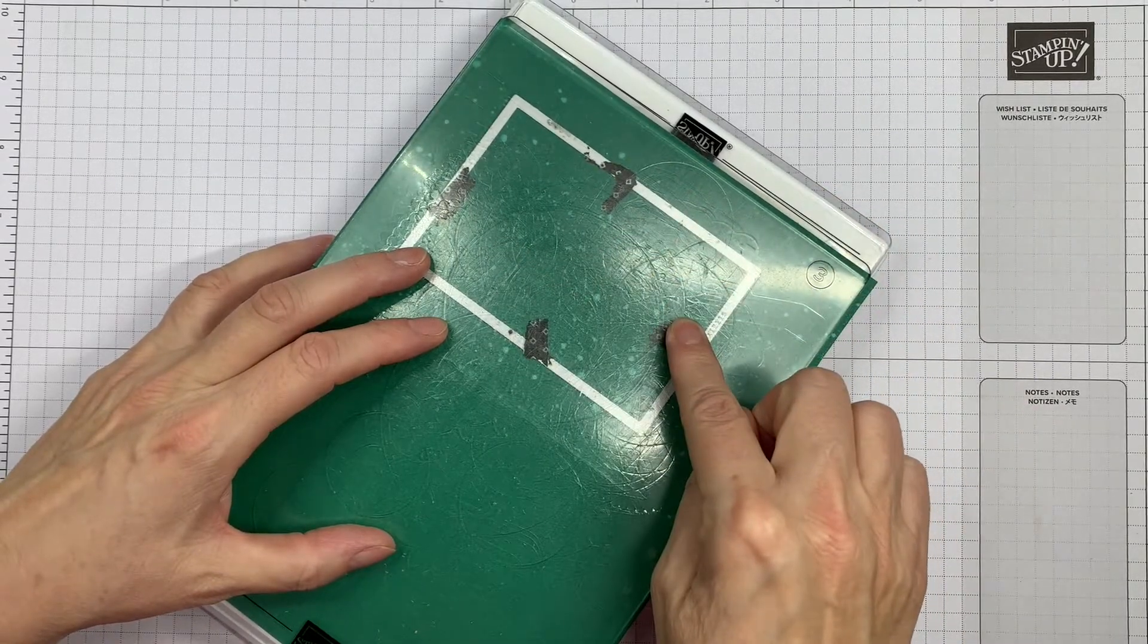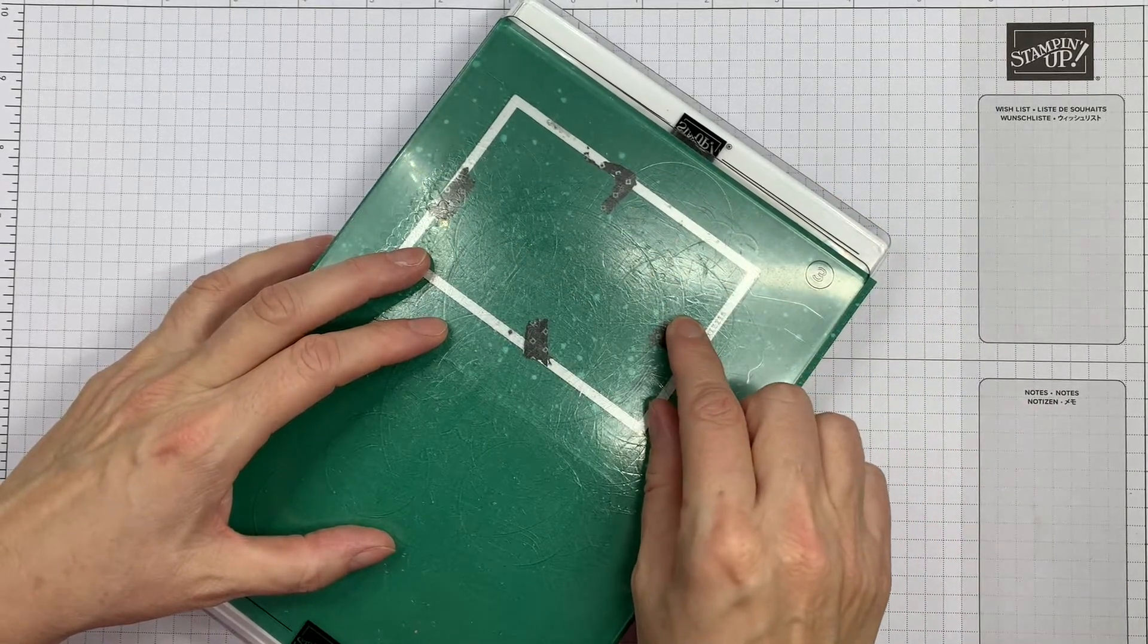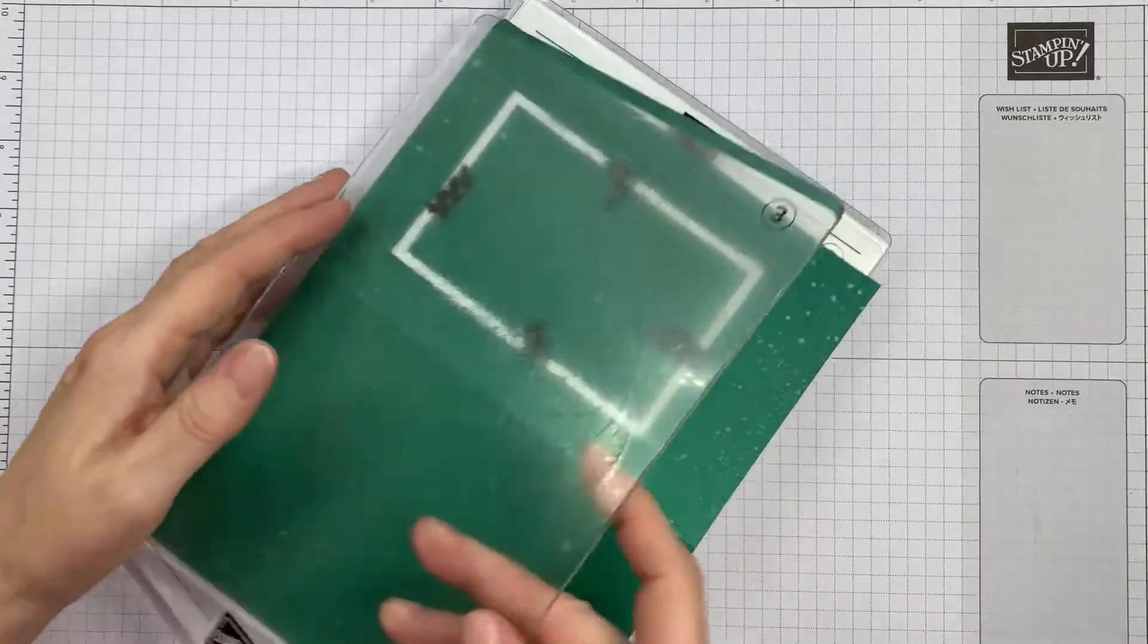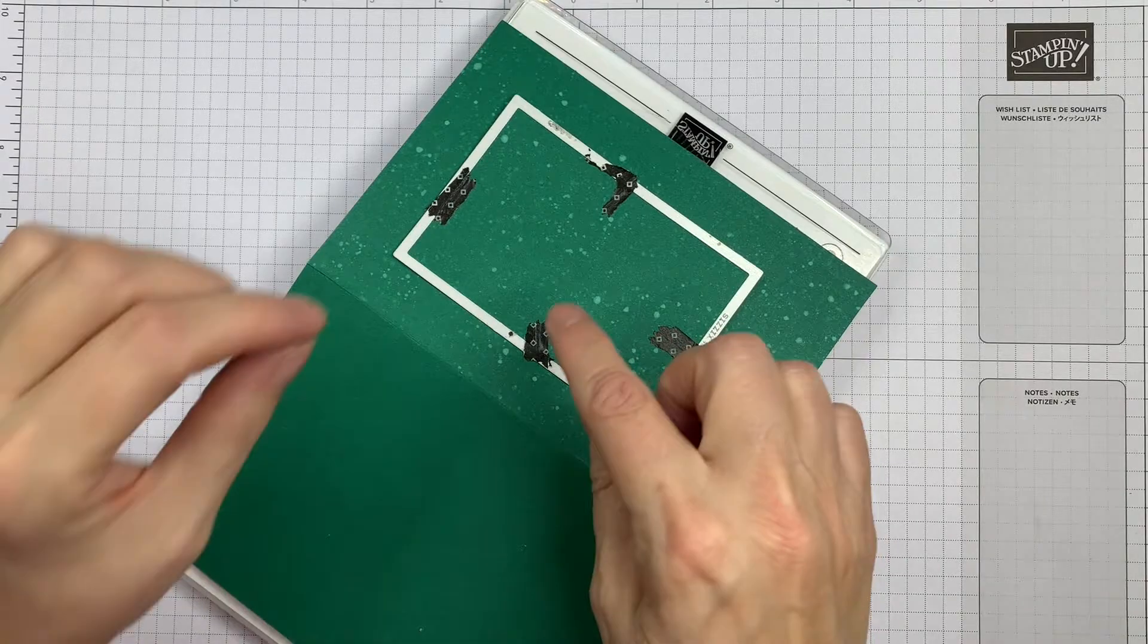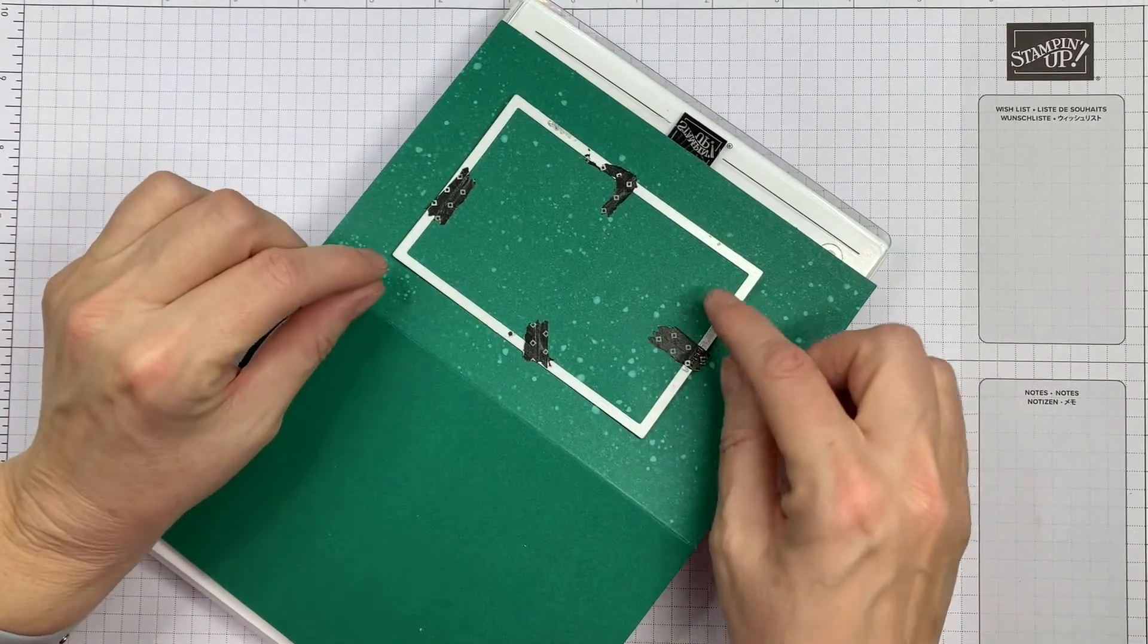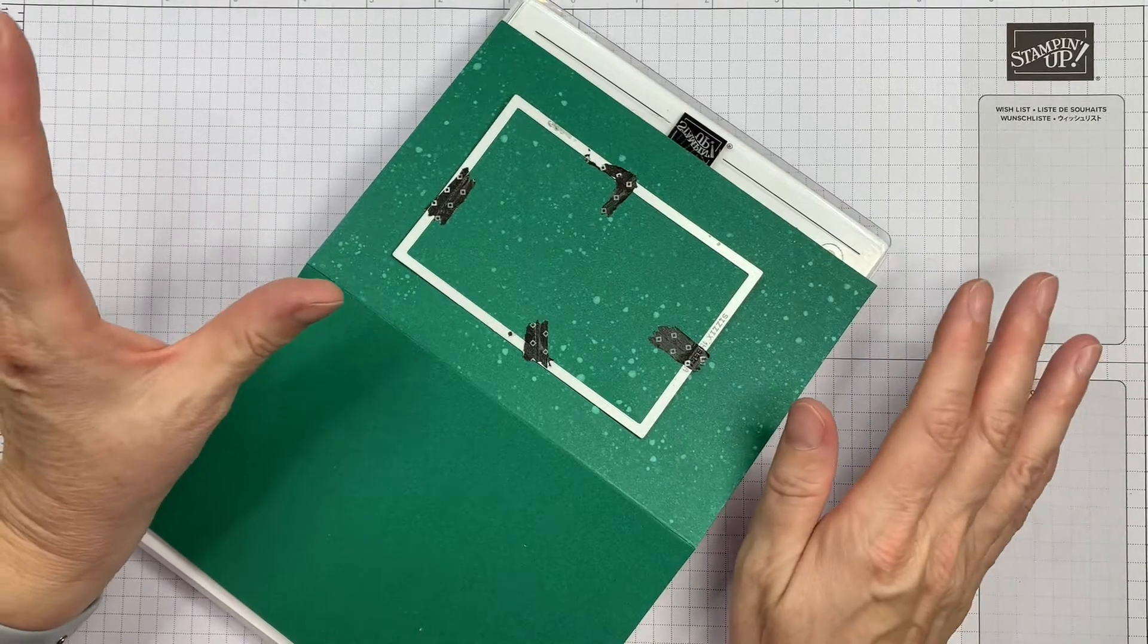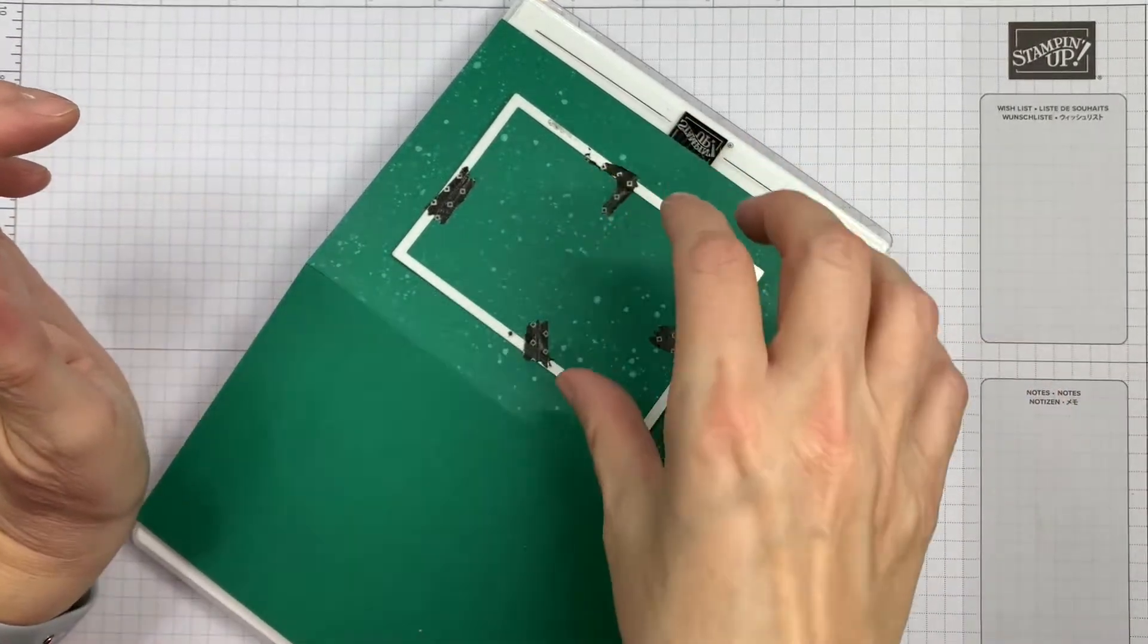I use a little bit of washi tape to hold my die in place, and I tend to put it so that the washi is on the bit that's getting cut out, just in case it sticks a bit too strongly. You could also use Post-it notes because they don't adhere quite as strongly.